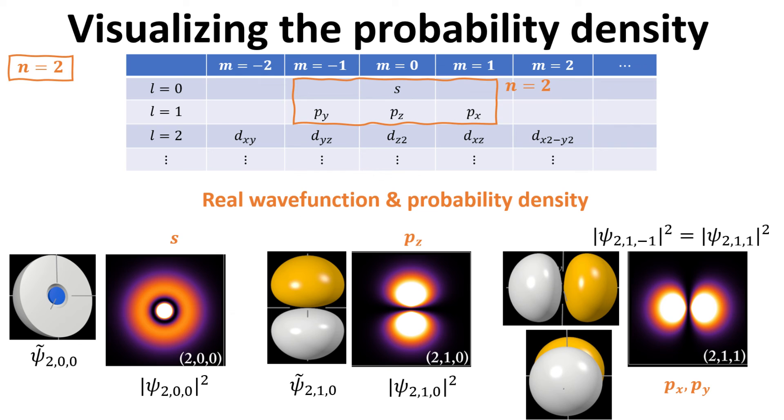Lastly, we visualize the px and py orbitals. The real wave functions are like the pz orbital, except that the lobe axis are now pointing along x and y respectively. On the other hand, the modulus square of the complex wave functions px and py are equal and is a torus shape lying on the xy plane.